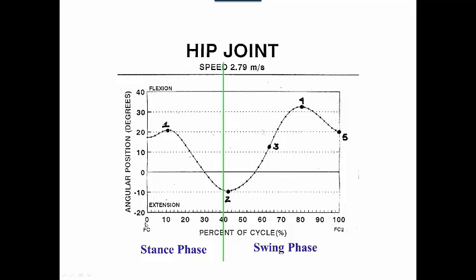We have along the x-axis this 100% of cycle, and 0 to 40% is the stance phase, and 40 to 100% or 60% of the cycle is the swing phase. And the FC refers to foot contact, so it's from one foot contact to the other foot contact.